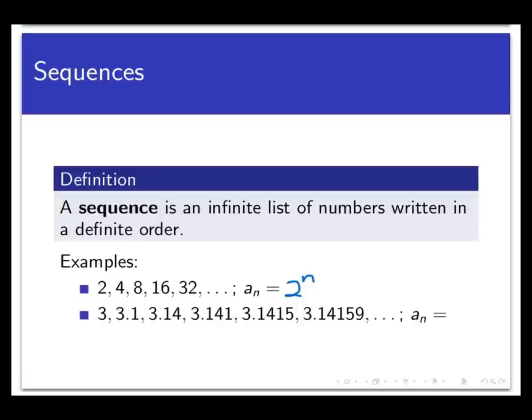Sometimes we don't get as easily described of a sequence. Like check out the second one here. a_1 is 3, a_2 is 3.1, a_3 is 3.14, a_4 is 3.141, there's a_5, a_6 and so on. So what is the nth term? It's kind of hard to describe that as a formula but it's very easy to describe this in words. a_n is simply the number pi taken out to n minus one decimal places.